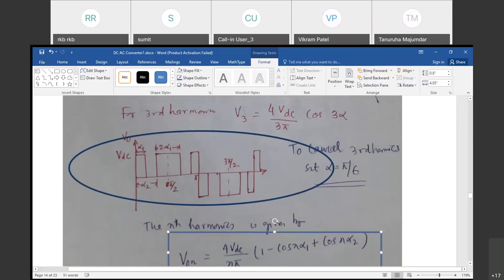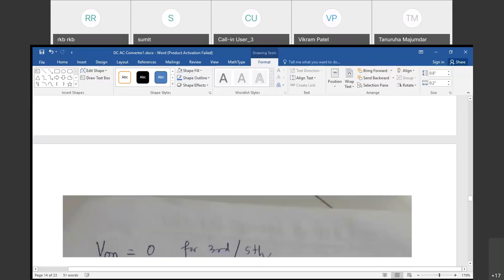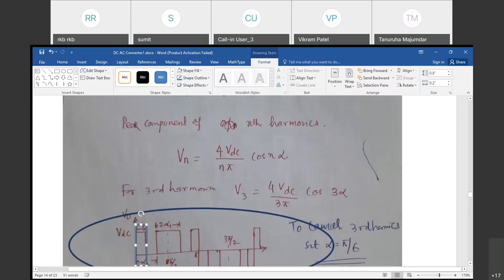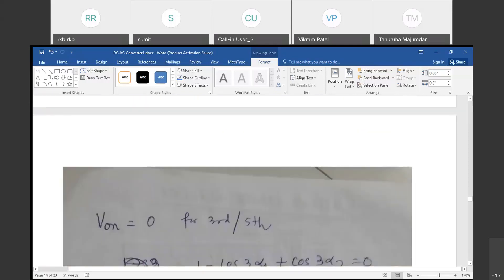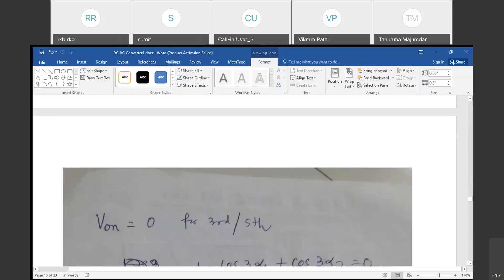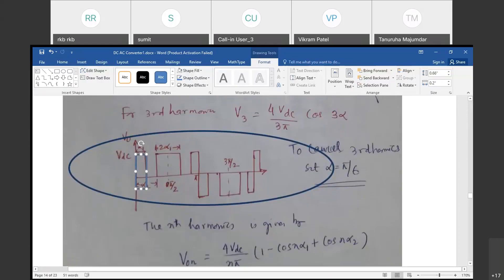That means this α1 and α2, these are the angles. This is 18 degrees, or 17.8 degrees. And α2 is 38 degrees. α2 is up to this point, is 38 degrees.